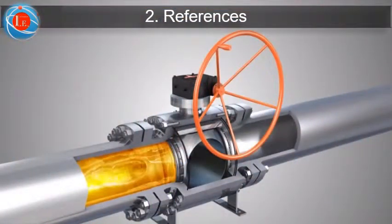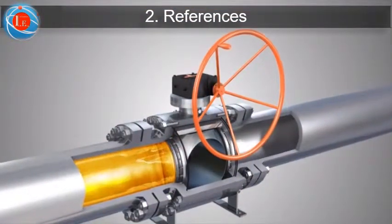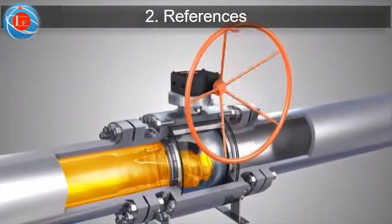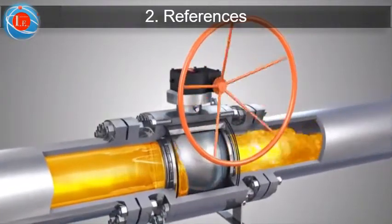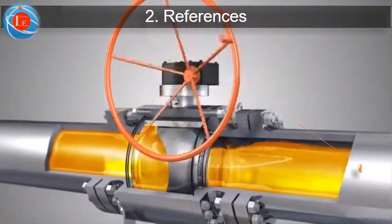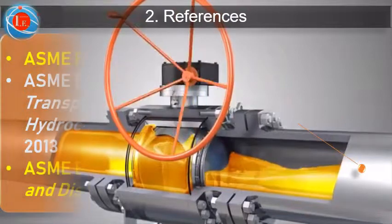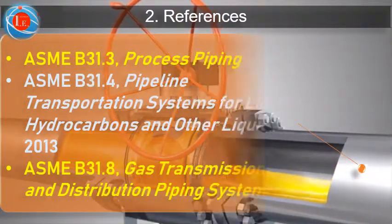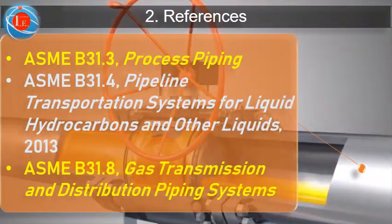Section 2 References includes other applicable normative references such as international codes, standards, and specifications. This slide shows the ASME codes that are applicable to the piping or pipeline attached to API 6D valves.